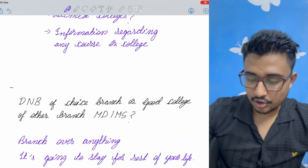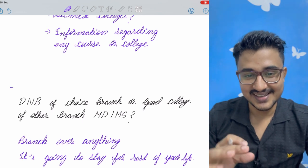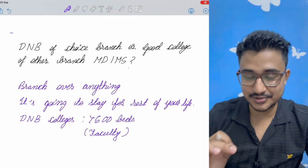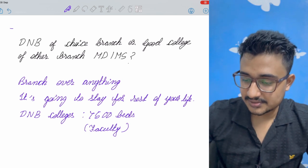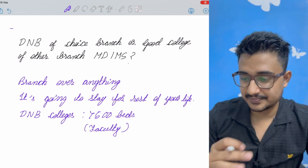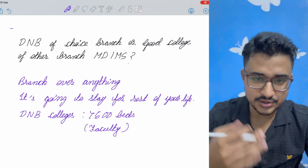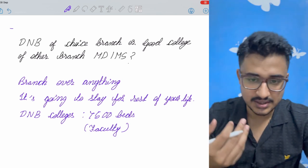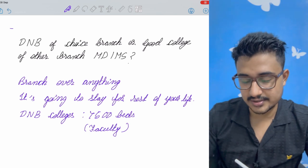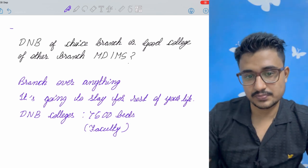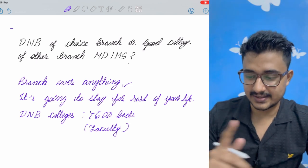Now coming back to the topic, some clinical scenarios, some real life scenarios, and what you should do. So DNB of a choice of branch and a good college of other branch, maybe your second choice, maybe your third choice, MDMS you are getting in a good college, in a good medical college or a DNB in your preferred stream. So in this case, branch over anything.